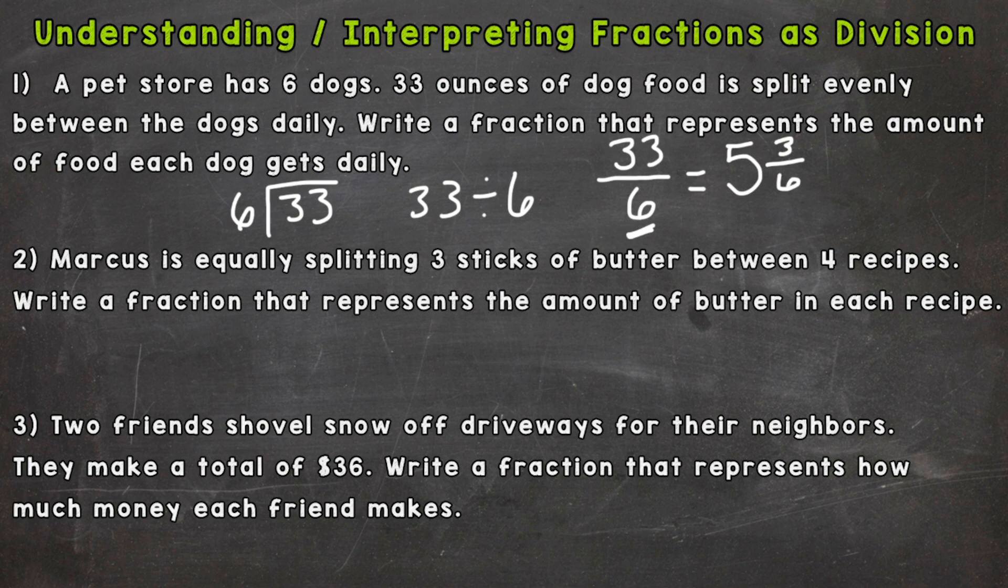5 and 3 sixths would be our answer, but we can actually simplify. There's a common factor between 3 and 6. We can divide them both by 3 and we get 5 and 1 half. So each dog gets 5 and a half ounces of dog food daily.